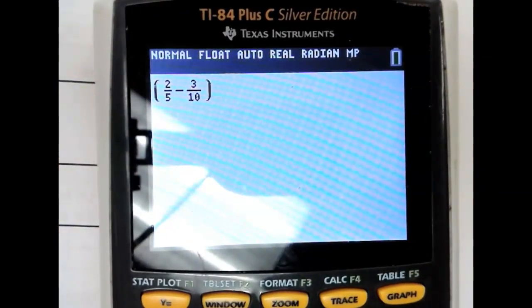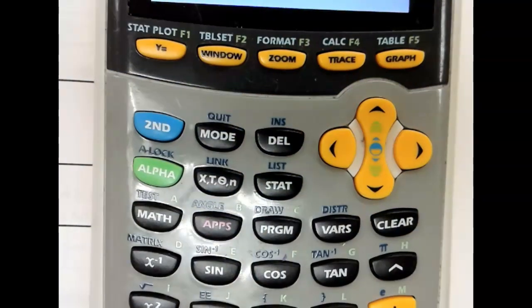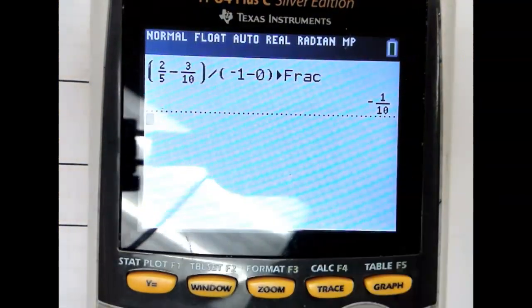Close your parentheses divided by parentheses negative 1 minus 0. And then if you hit math, enter, enter, enter, it'll keep it as a fraction.